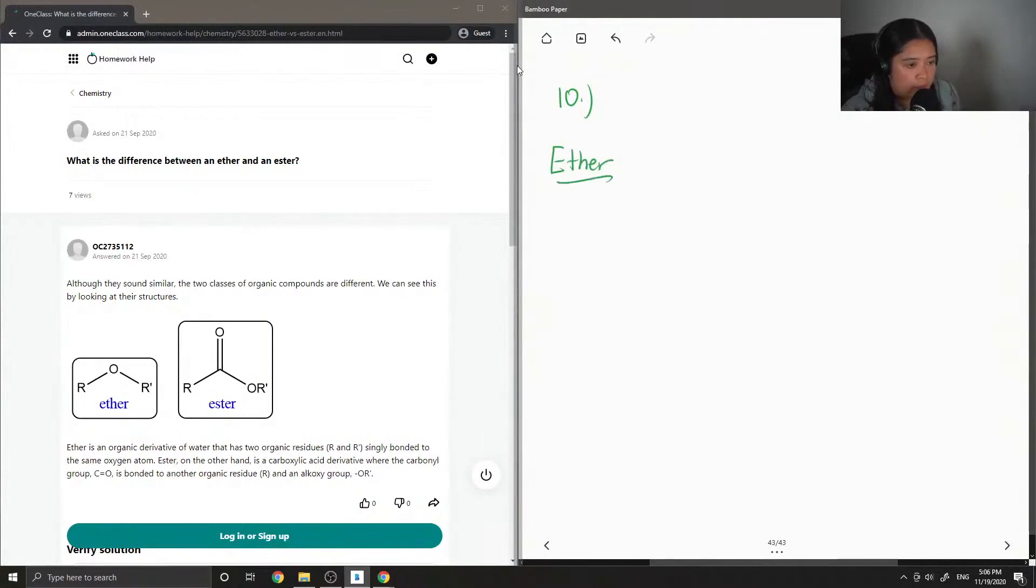So an ether is when you have an oxygen that is in the middle of two different organic groups. These can be any carbon groups. That's what the R stands for. A way to remember it is that there is a carbon on either side. So these are ethers.